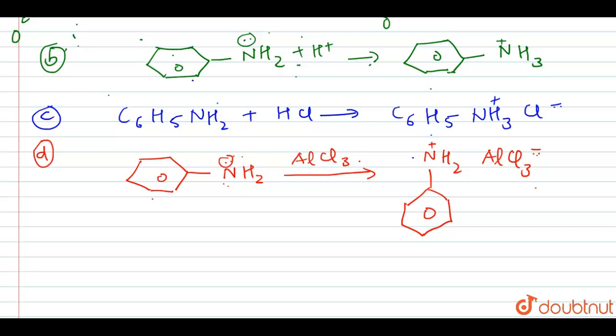This forms NH2+ and AlCl3-. This takes away the lone pair from nitrogen and deactivates the ring, making it an electron withdrawing group. The presence of NH2+ AlCl3- makes it an electron withdrawing group, making it a deactivating group.